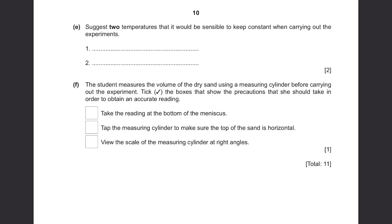Part E. Suggest two temperatures that you would be sensible to keep constant when carrying out the experiments. There are two temperatures used in the experiment which are independent variables. There were the temperature of hot water and the room temperature. Those two shouldn't change but kept constant throughout the experiment.